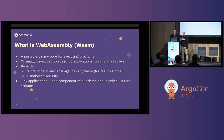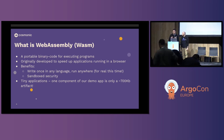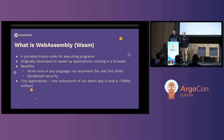Web Assembly is a portable binary format for executing applications. It originally was developed for browsers. The idea was that in order to build more complicated, more performant applications in the browser, you'd use something like Web Assembly to bring in languages that are not JavaScript — such as Rust, Go, C — to build very complex applications on the browser side.